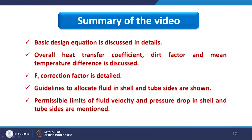These are the guidelines for shell and tube heat exchanger design. References are provided for detailed study of basic design parameters. In summary, these two lectures covered: the basic design equation (Q = U·A·ΔT_LM) in detail, overall heat transfer coefficient, dirt factor, mean temperature difference, FT correction factor, guidelines for fluid allocation to shell and tube side, and permissible limits for fluid velocity and pressure drop. That is all for this lecture. Thank you.